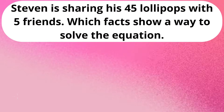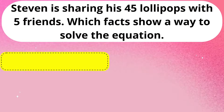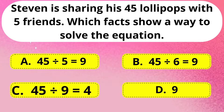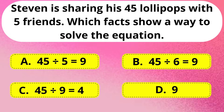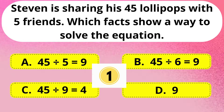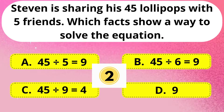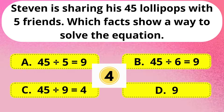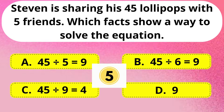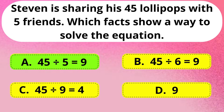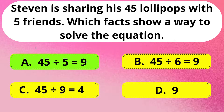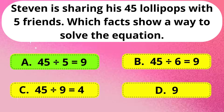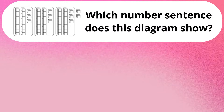Next question. Stephen is sharing his 45 lollipops with 5 friends. Which fact shows a way to solve the equation? The right answer is Option A.